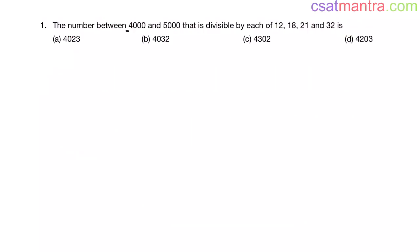The number between four thousand and five thousand that is divisible by each of 12, 18, 21 and 32 is. Options are given my friends.